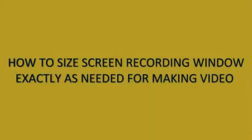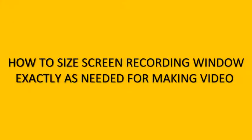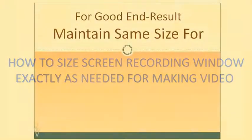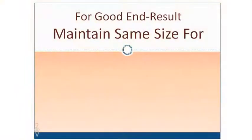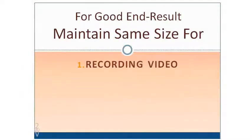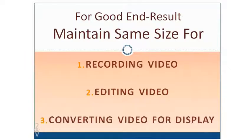If there is one important rule for combining different kinds of videos, it must be that the size of the various recordings ought to be the same. In fact, when the size of an exhibit is kept constant while recording, editing and displaying, the end result has a greater chance of turning out a good one.